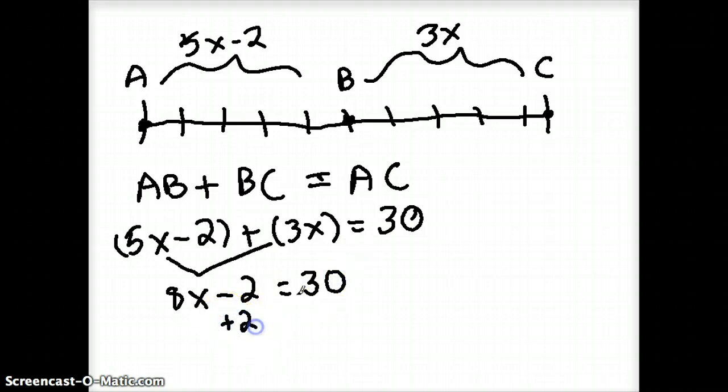I'm going to add the opposite here. Get rid of that negative 2 by doing the opposite and adding 2 to both sides. So this cancels, right? So now I have 8x equals 32.